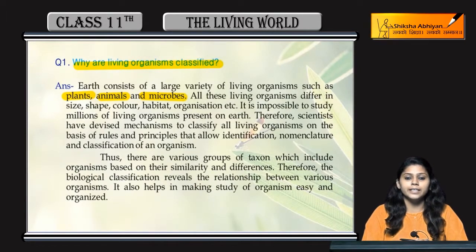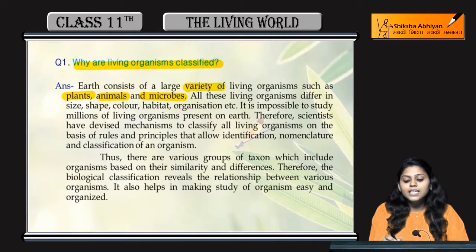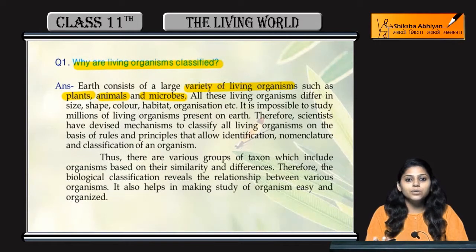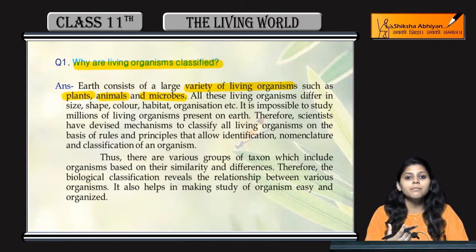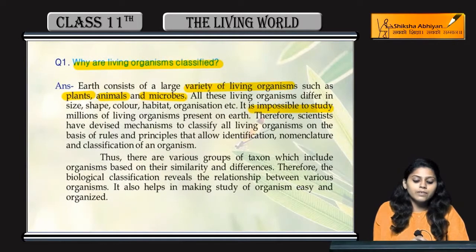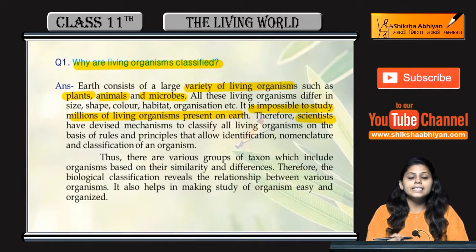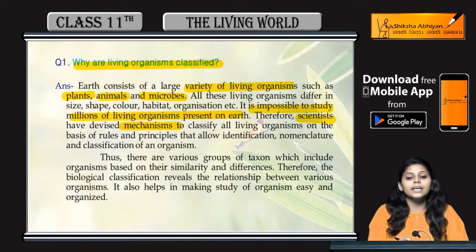यह नाम दिया गया है। अब earth में, इस planet में बहुत सारी variety है living organisms की, और बहुत सारे millions of species हैं। तो इतनी सारी variety होने की वज़ह से इन सबको एक साथ study करना impossible है। It is impossible to study millions of living organisms present on this planet। इसलिए scientists ने एक ऐसा mechanism devise किया है।